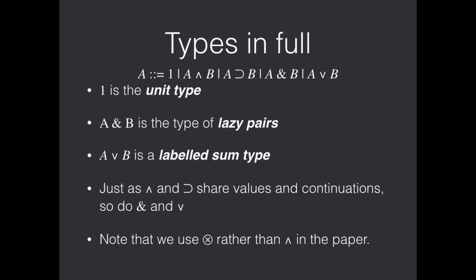Now, I've mentioned a little bit that we have types other than the two that we discussed here. And so here's a brief description of them. We have a unit type one. We have a type a with b of lazy pairs. And we have a type a or b of labeled sums. And you can see if you look at the paper, just like positive conjunction and implication share values and continuations in a form of duality. So do with and or lazy pairs and labeled sums. And I'll also note that in the paper, we use tensor rather than wedge for positive conjunction. This doesn't make much of a difference though.